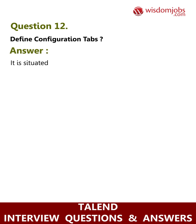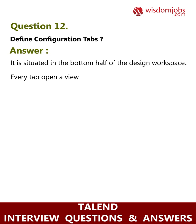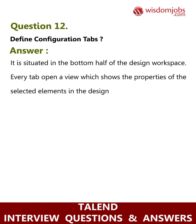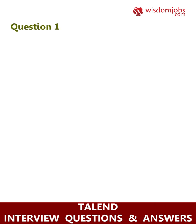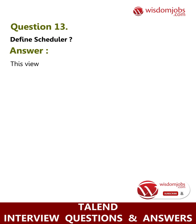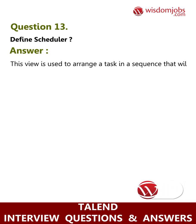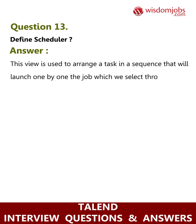Question 12: Define configuration tabs. Answer: Configuration tabs are situated in the bottom half of the design workspace. Every tab opens a view which shows the properties of the selected elements in the design workspace. Question 13: Define scheduler. Answer: This view is used to arrange tasks in a sequence that will launch one by one the jobs we select through the crontab program.